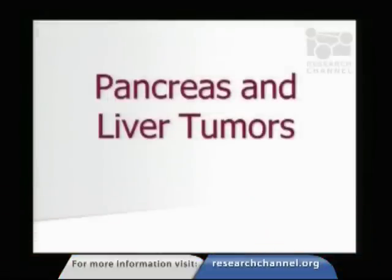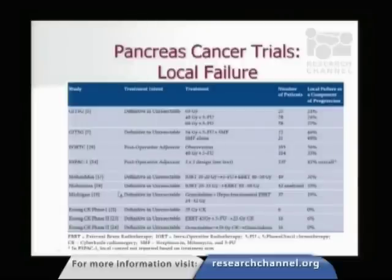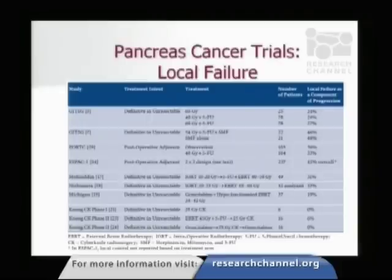Moving on to pancreas tumors and liver tumors — we've been pretty active in pancreatic cancer cases. This was a treatment we initially used as a proof of principle: can we treat tumors that move with respiration? We showed that to be true, but also gained insight into whether we could actually help patients. It turned from a feasibility to an efficacy study. These numbers from radiation and chemotherapy trials for pancreatic cancer show that about a quarter to a half of patients will suffer some kind of local failure, meaning radiation is actually important in the disease and contributes to pain.